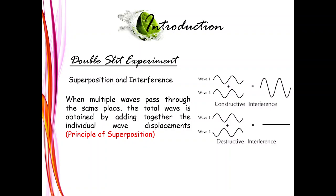There are some key theories in superposition and interference. When multiple waves pass through the same place, the total wave is obtained by adding together the individual wave displacements — this is called the principle of superposition. When two waves are in phase, that is when crest meets crest and trough meets trough, there is a bigger wave: this is called constructive interference. When trough and crest come together, it becomes destructive interference.